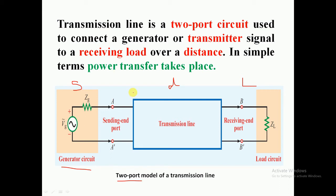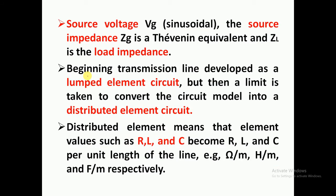Power transfer is possible over a distance through transmission lines. One more important point: initially, at the beginning, transmission lines were analyzed as a lumped circuit. After some time, they began to be studied as a distributed element circuit. The meaning of distributed element is that R, L, and C are expressed per unit length — that is, ohms per meter, henries per meter, and farads per meter.